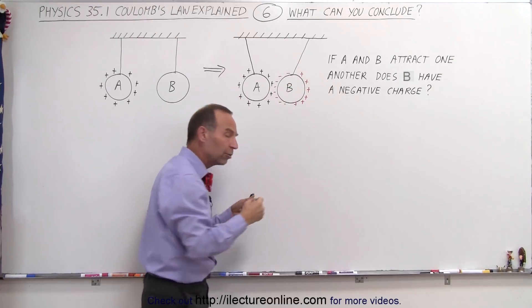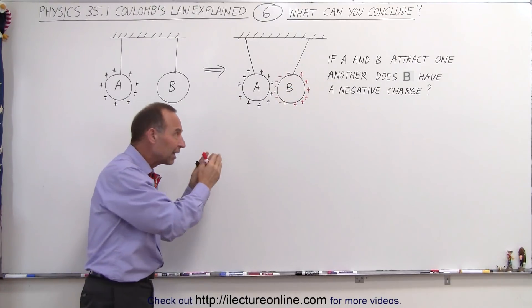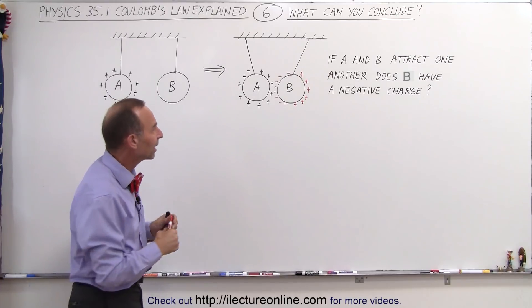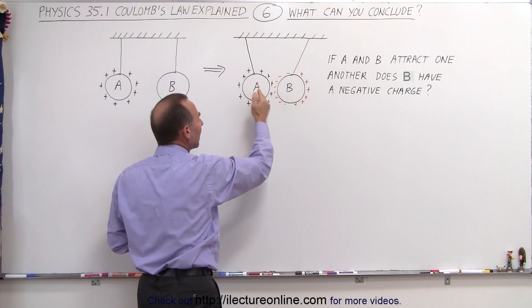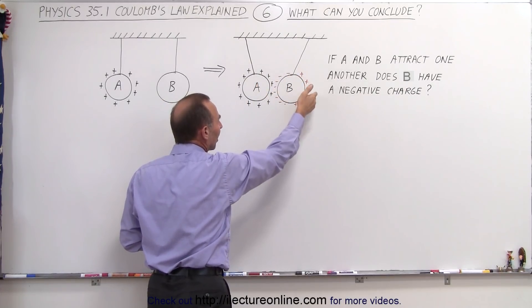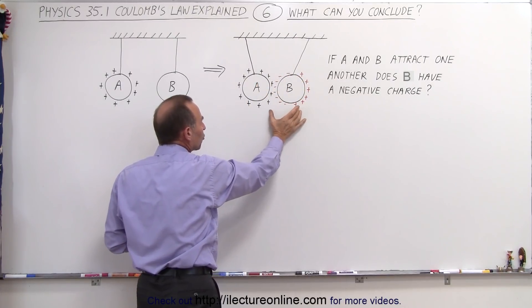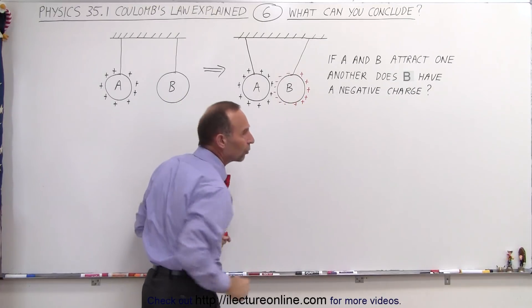sphere B now becomes polarized. It has more negative charge on one side, more positive charge on the other side, and those negative charges on the left side are closer to A than the positive charges on the other side, and so there will be some attractive forces pulling them closer together.